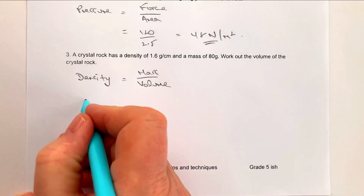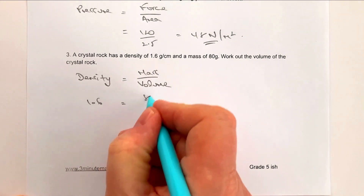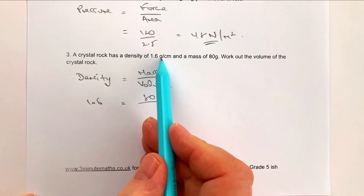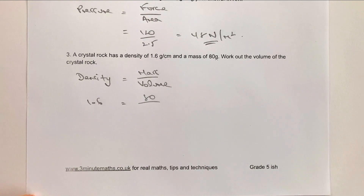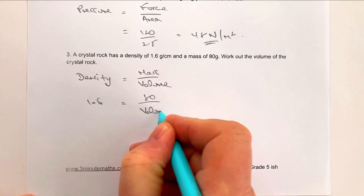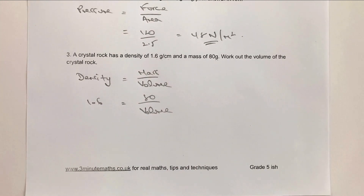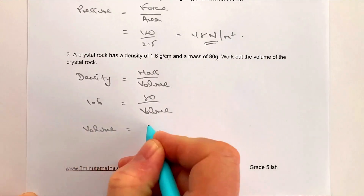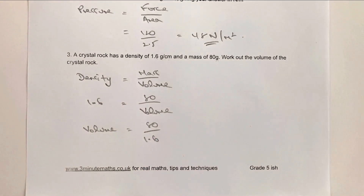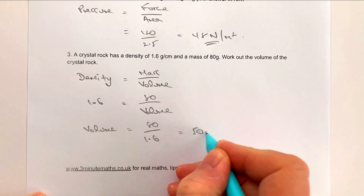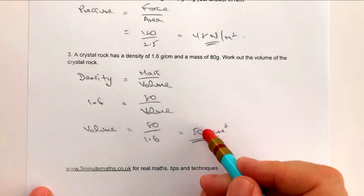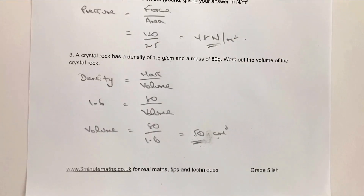The density is 1.6, the mass is 80 grams, and units match since it's grams per centimeter cubed. We need to find the volume, so using a little algebra — multiply both sides by volume, then divide by 1.6 — we get volume equals 80 divided by 1.6, which is 50 centimeters cubed. That's the volume of this particular crystal rock.